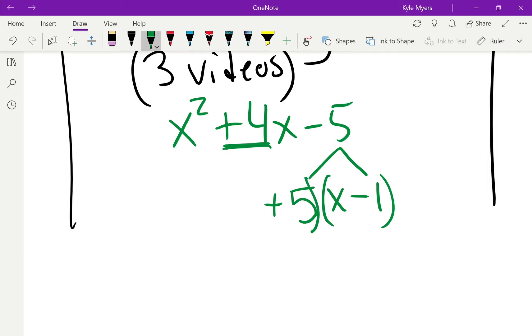Once I've found the exact two numbers that multiply to give me the last number and add or subtract to give me the middle number, then I'm good to go.